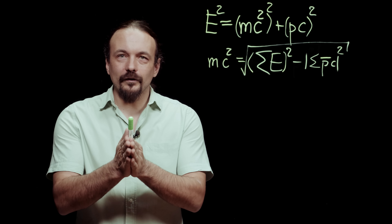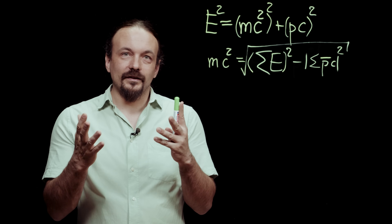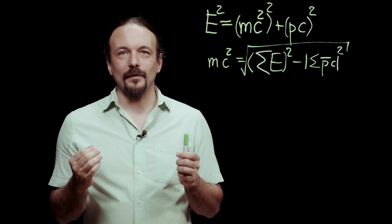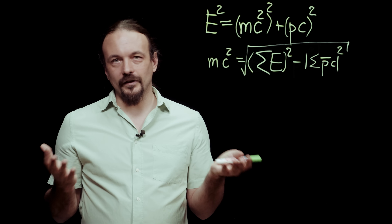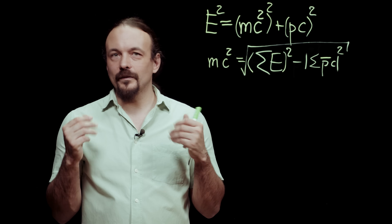So the bottom line of all of this is: when we detect two photons, we can calculate the invariant mass of the two-photon system. And if the two photons come from the decay of the Higgs boson, this mass will be the mass of the Higgs. So it looks like we're almost done — we just need to go through the collisions, find the ones that have two photons in them, calculate the invariant masses of these photon pairs, and when we find a pair where that mass is the mass of the Higgs, bingo, we have a discovery, right?